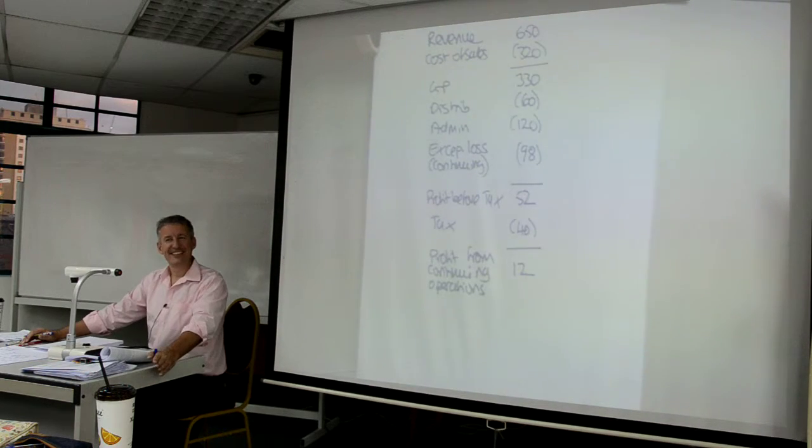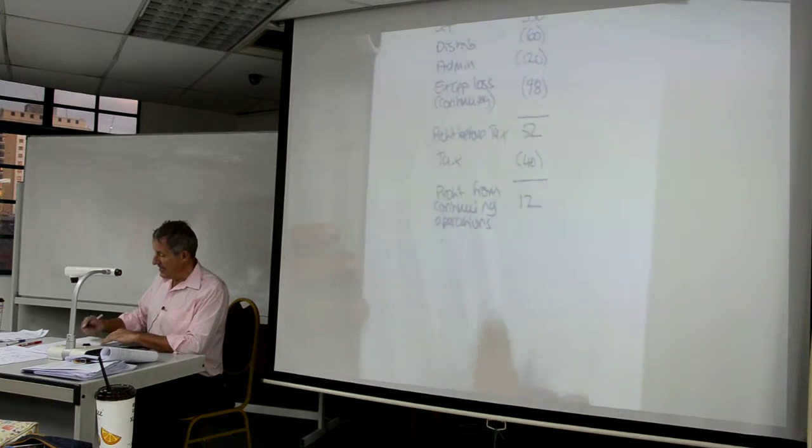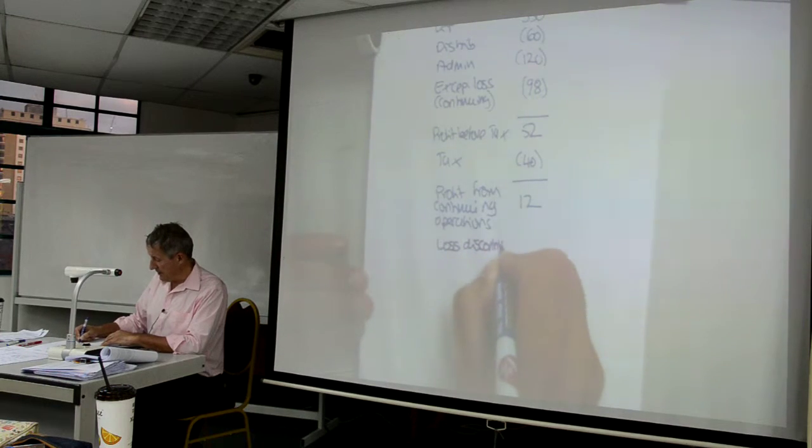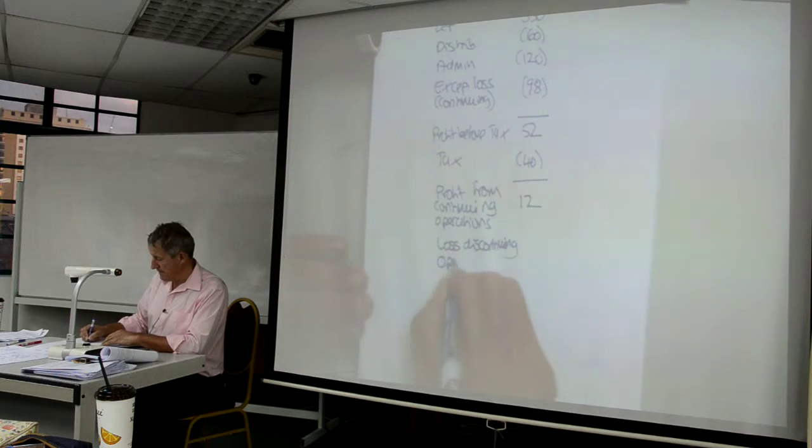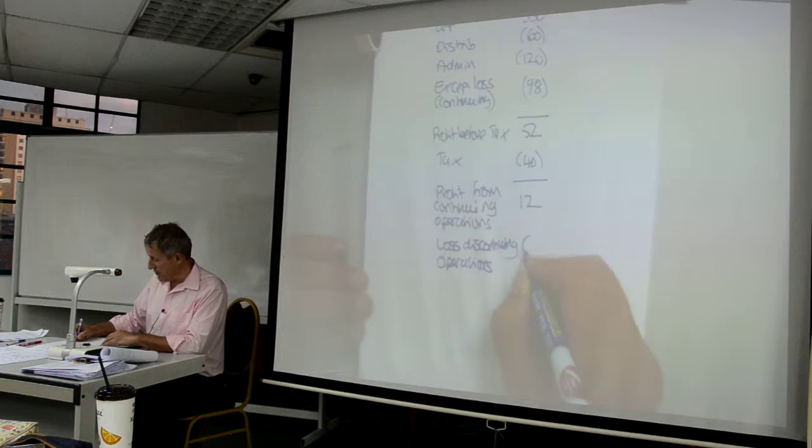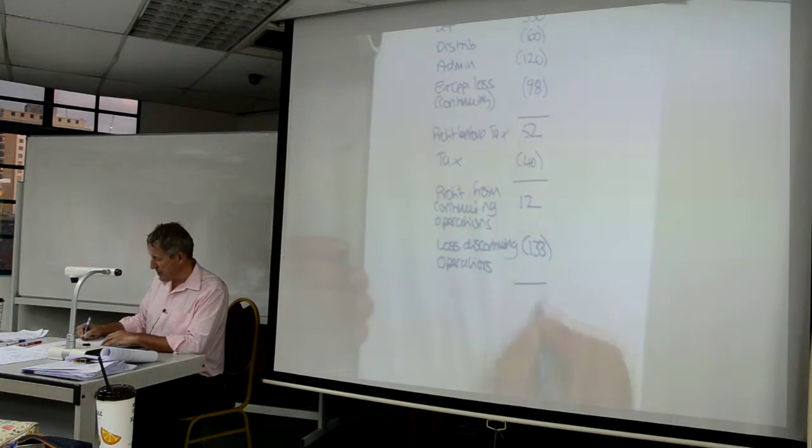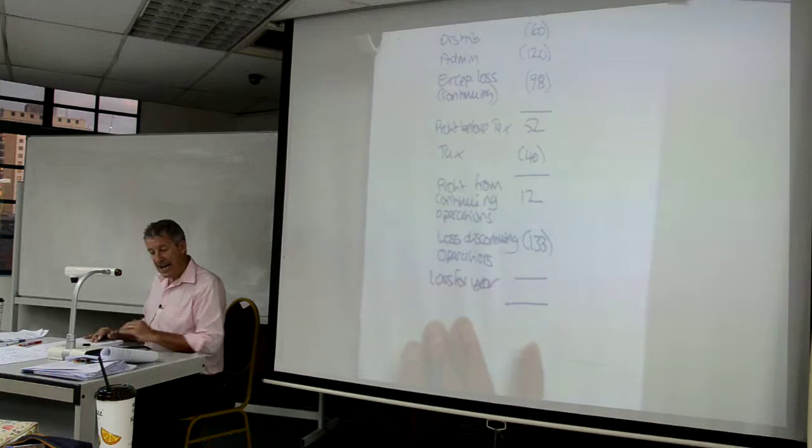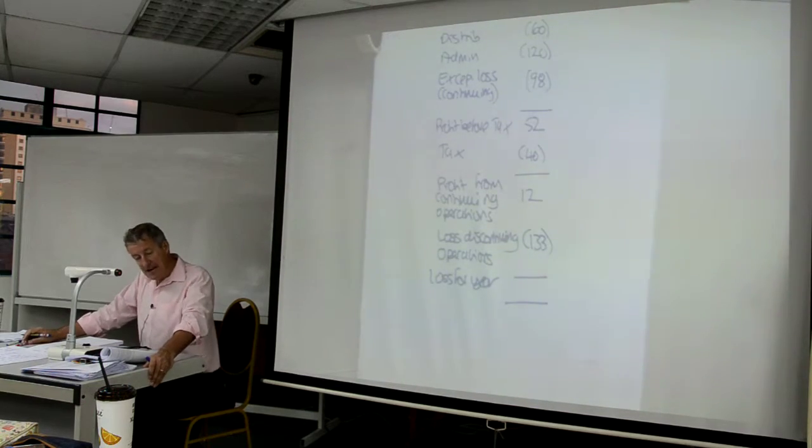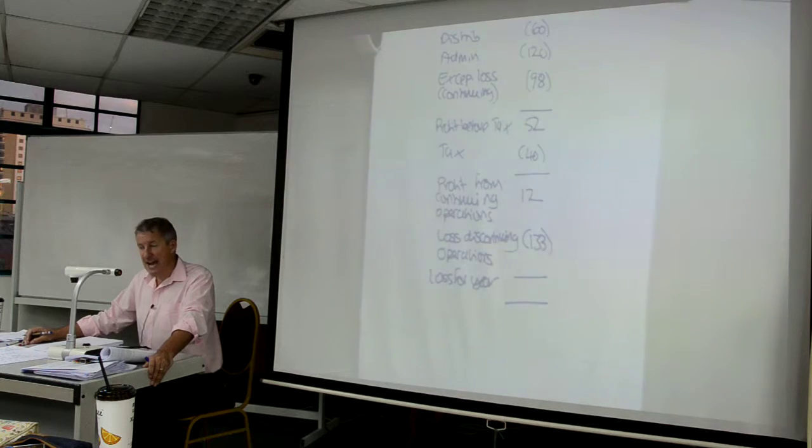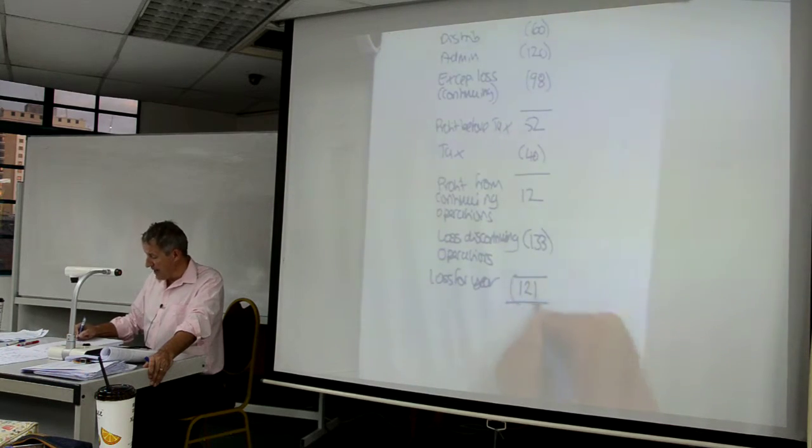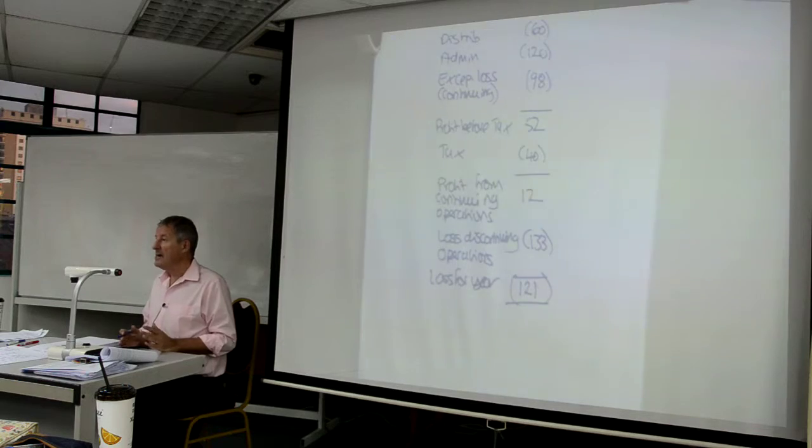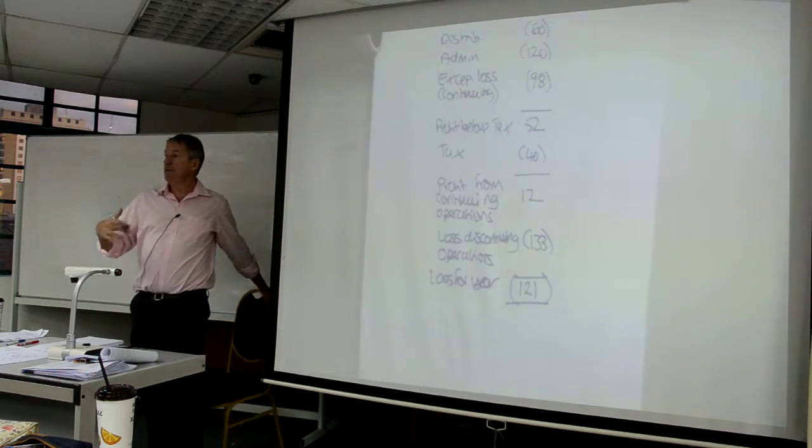I haven't finished. Because I now bring in, in my single line, the loss from the discontinuing operations. And the loss from the discontinuing operations was $133. And we should recognize the number at the bottom. The number at the bottom is the loss after tax. The number at the bottom is $121. And that loss after tax is exactly the same number as just above the required, but the presentation of the number is presented in such a way that we are trying to encourage the users to extrapolate.